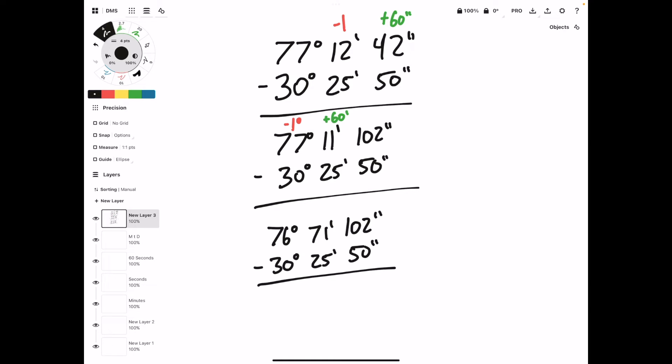Okay, and now that we have more on top in every column, we can start doing the subtraction. So 102 minus 50, that gives us 52 seconds. 71 minus 25, quick maths, that's 46 minutes. And then 76 minus 30 gives us again 46 degrees. So our final answer is 46 degrees, 46 minutes, 52 seconds.